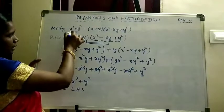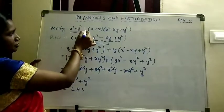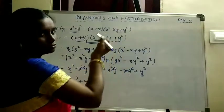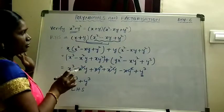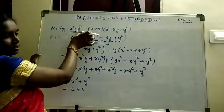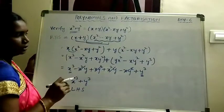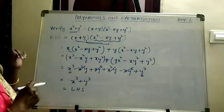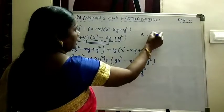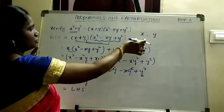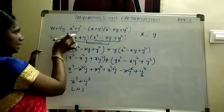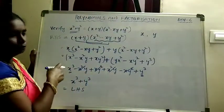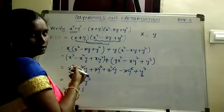So x cube plus y cube is definitely equal to x plus y into x square minus xy plus y square. Now we will see whether this equation is an identity or not. To check if it is an identity, we have to take some values for x and y. If we substitute those x and y values in LHS and RHS, we have to get the same value.